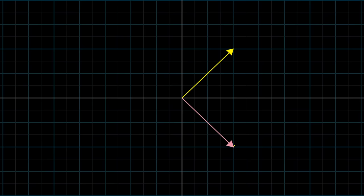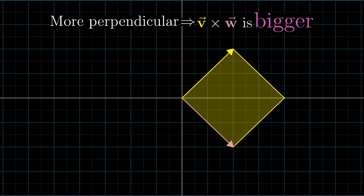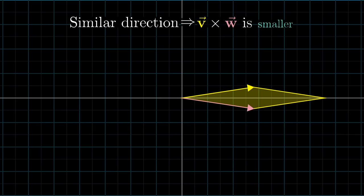For example, you might notice that when two vectors are perpendicular, or at least close to being perpendicular, their cross product is larger than it would be if they were pointing in very similar directions, because the area of that parallelogram is larger when the sides are closer to being perpendicular.